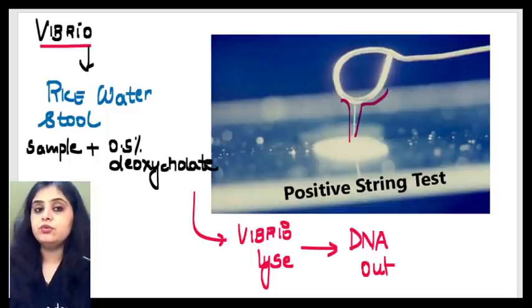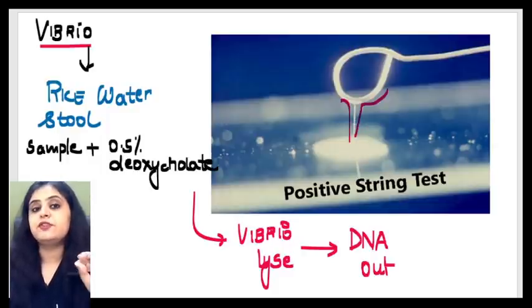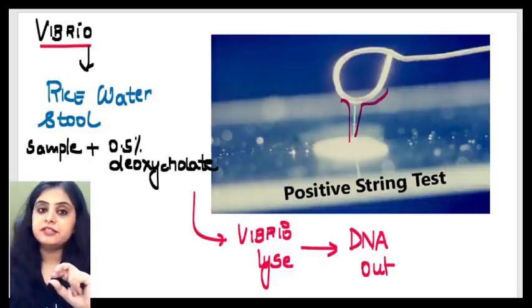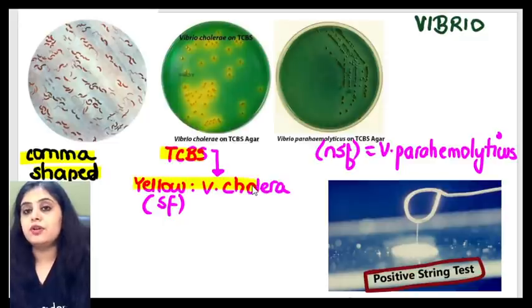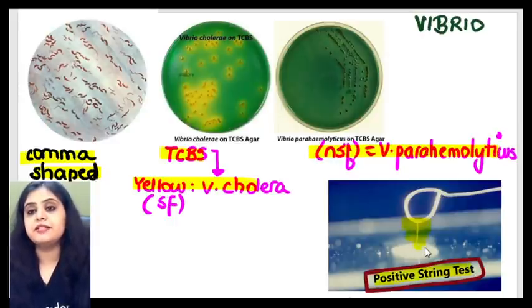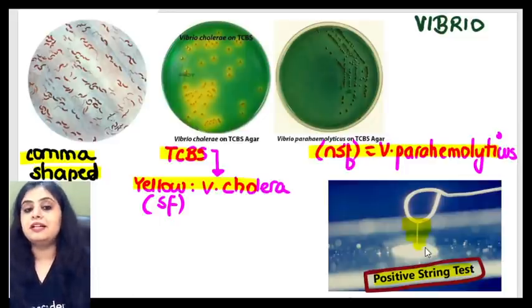So remember, the DNA that comes out ultimately gives you the stringy appearance. Just one word on what are you using: 0.5% deoxycholate. And what is the principle behind it? That the DNA that is going to be released from the lysed cells is what is going to make it all viscous. I hope this is clear with everyone because that brings us to the end of the Image of the Day. These were comma-shaped gram-negative bacilli. TCBS helped me know that Vibrio cholera is a sucrose fermenter and Parahemolyticus is a non-sucrose fermenter. And a positive string test is because the DNA has been released from the cells after lysis. What chemical? Bile salt.